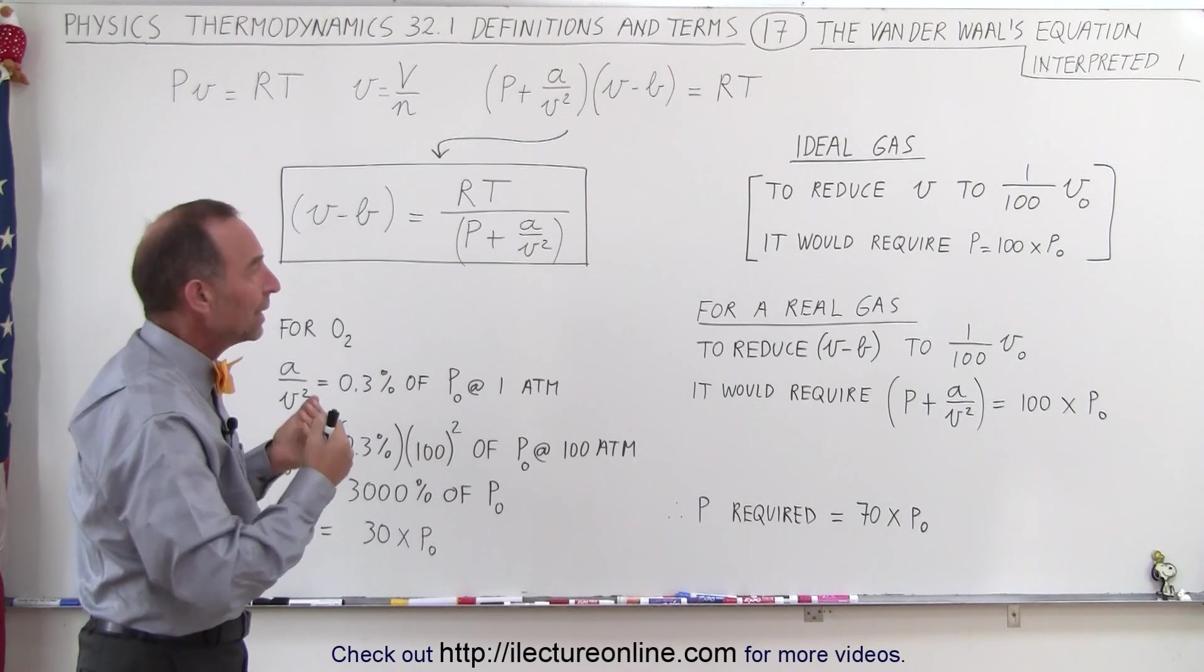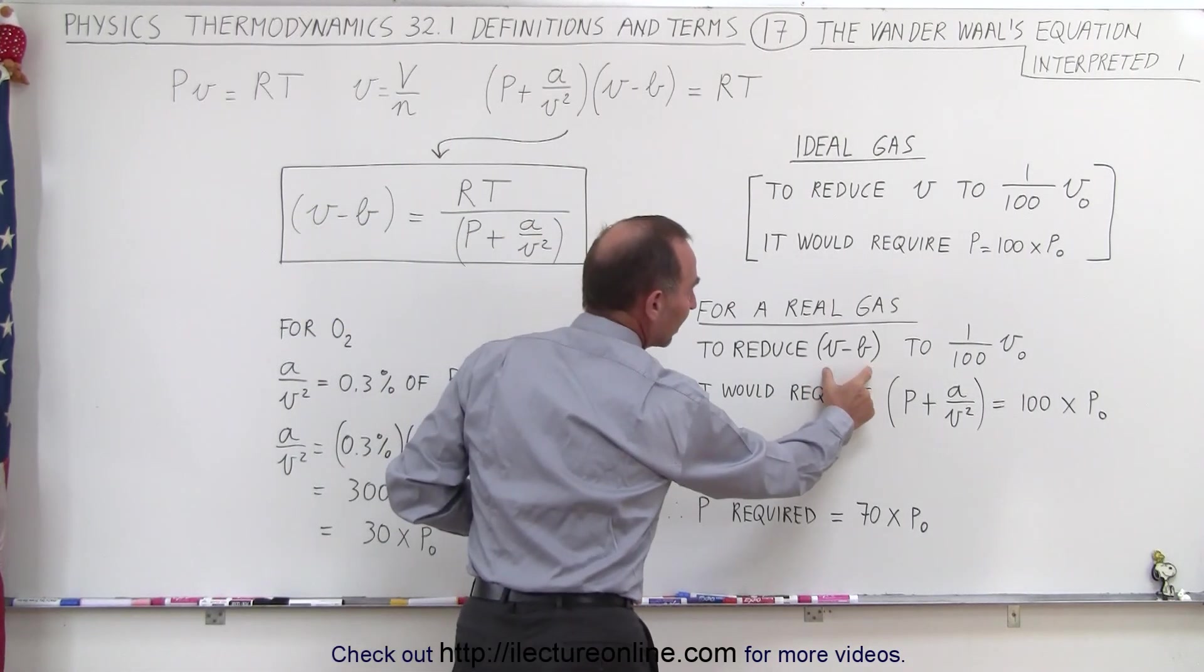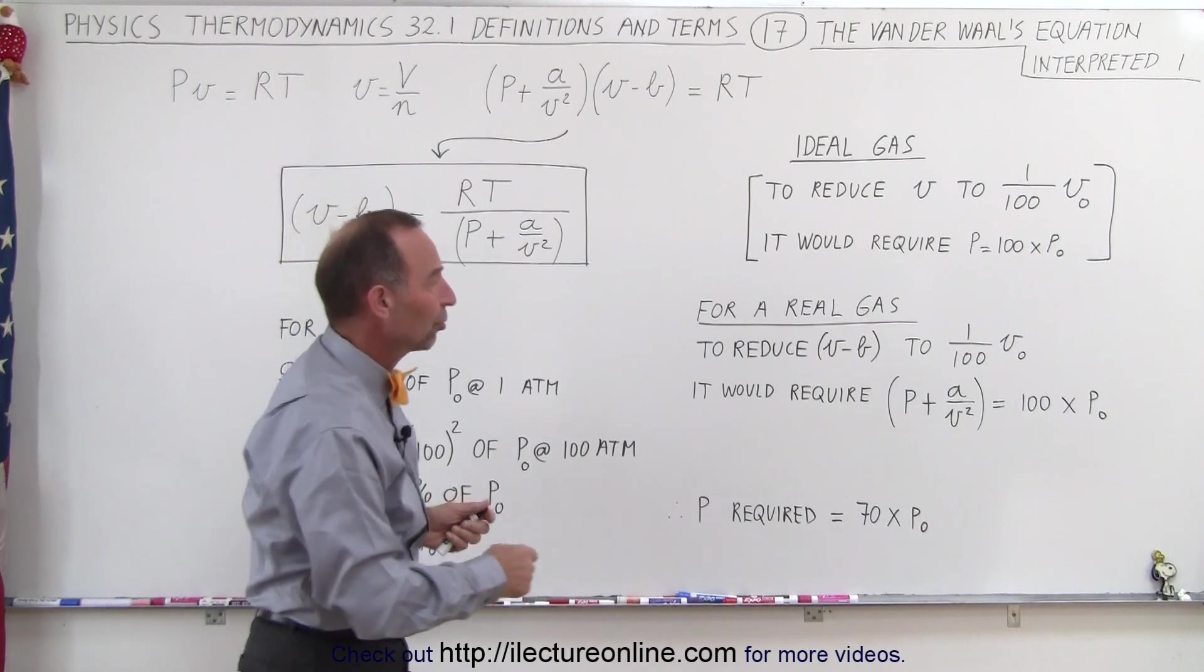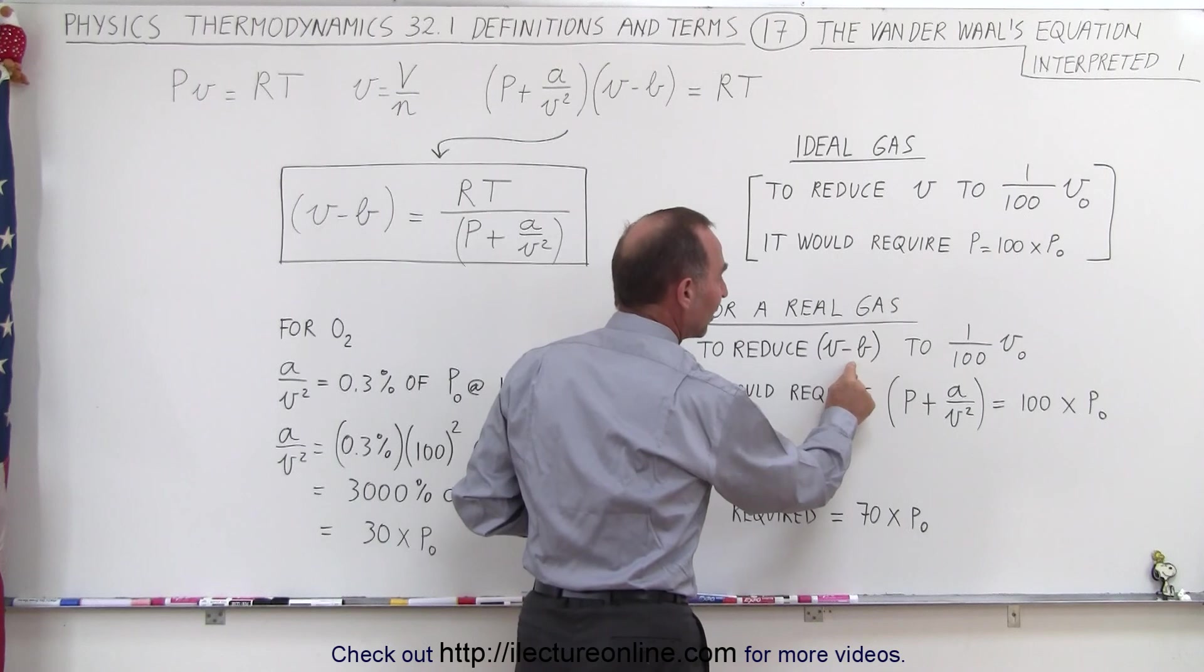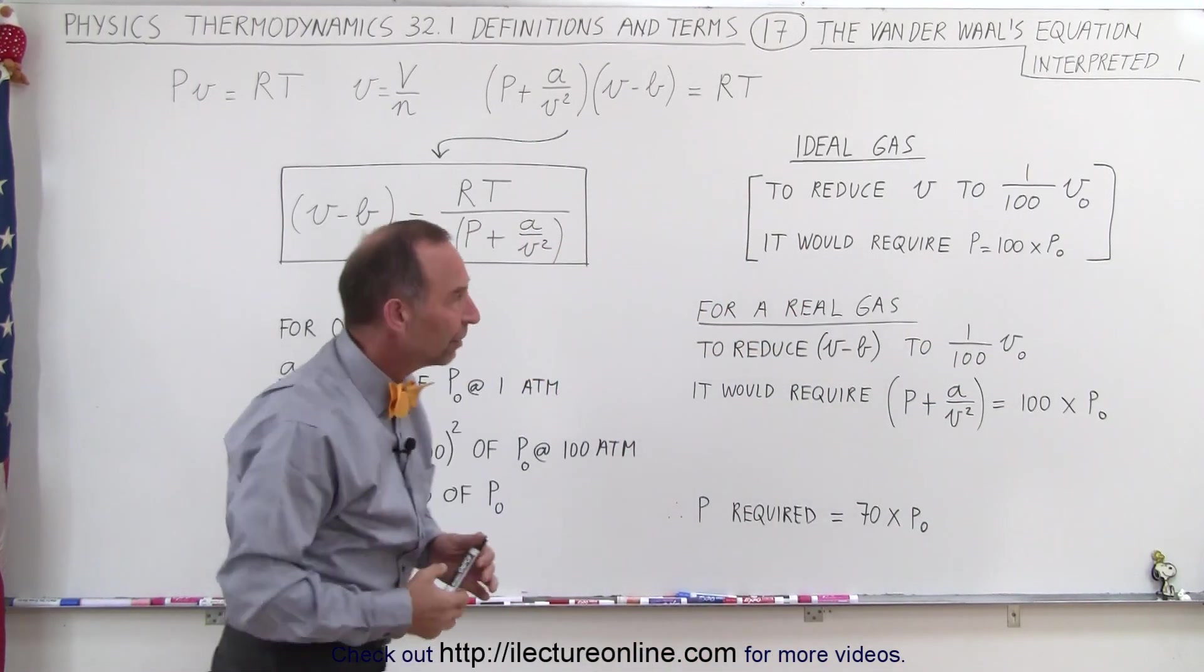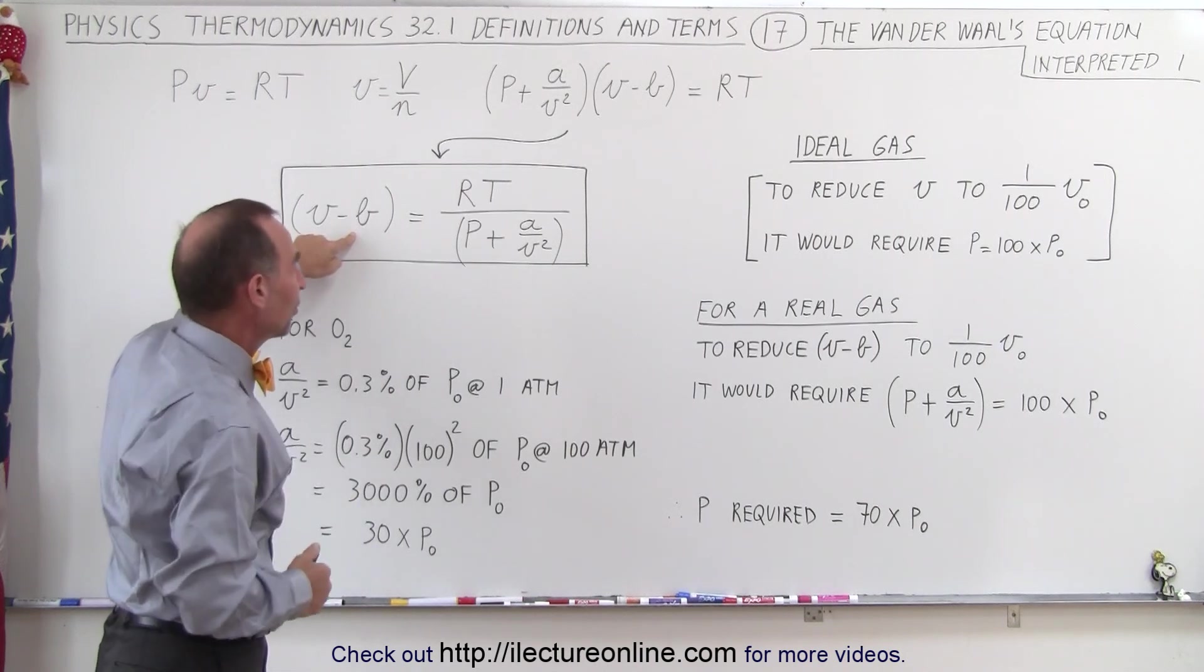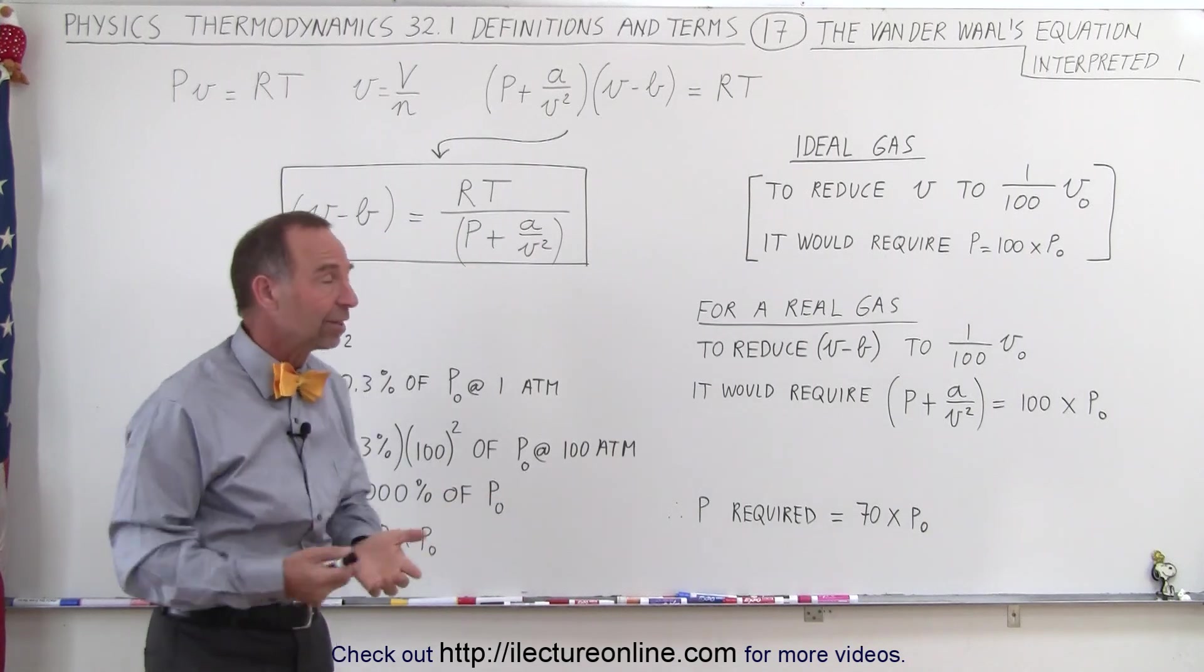So for a real gas, how do we need to look at it? We can say to reduce the quantity v minus b—and again, b is insignificant when the pressure is near atmospheric pressure, but it becomes significant when the pressure increases by a lot. So we have to say v minus b if we want that to be one-hundredth original volume, because the Van der Waals equation allows us to let b go to zero or near zero when the pressure is near atmospheric pressure.